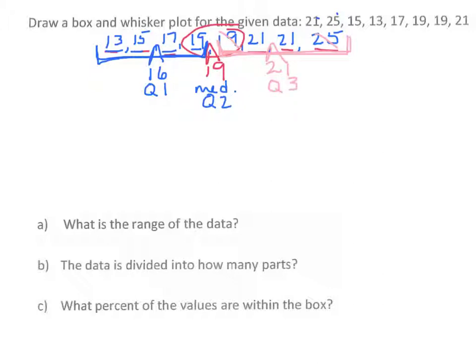Now those are your three quartiles. You will also need your lowest value and your highest value. And you'll be ready to make your box and whisker plot.